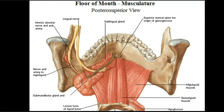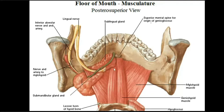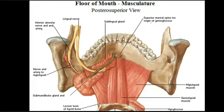The next muscle which shares in the formation of the floor of the oral cavity is the geniohyoid muscle. On the inner surface of the body of the mandible, on each side of the midline, we have two genial tubercles — a superior and an inferior on each side. The superior gives rise to a muscle of the tongue. The inferior one gives rise to the geniohyoid muscle, which is ribbon-like, rising from the inferior mental spine and passing backward to attach to the inferior aspect of the body of the hyoid bone. It lies above the mylohyoid muscle and reinforces it.